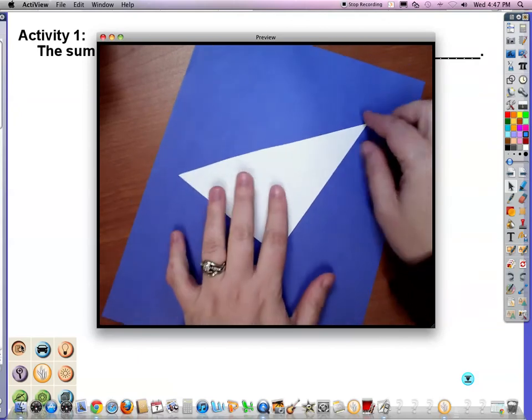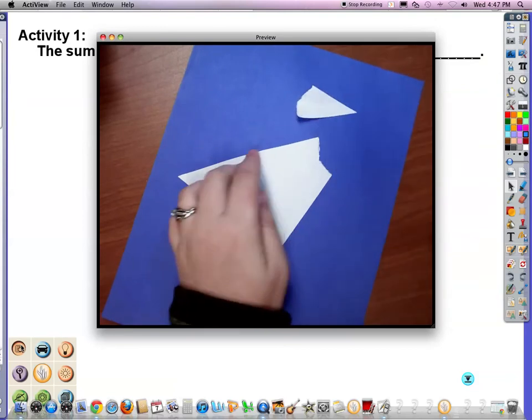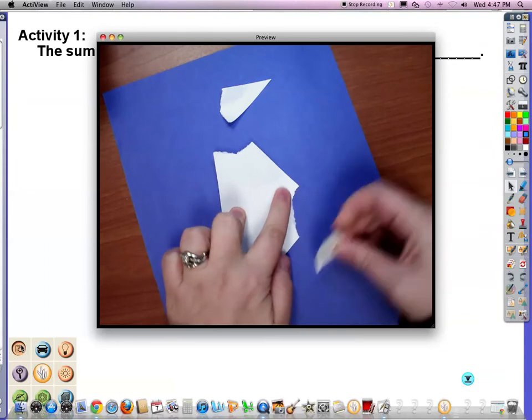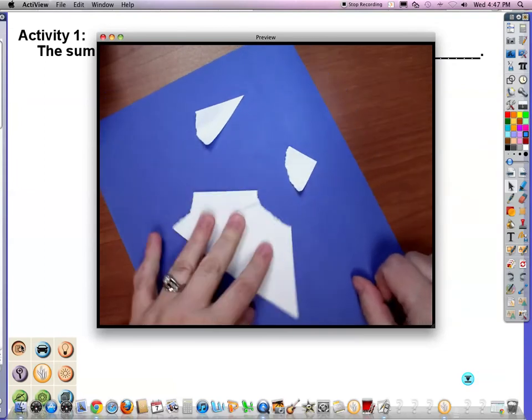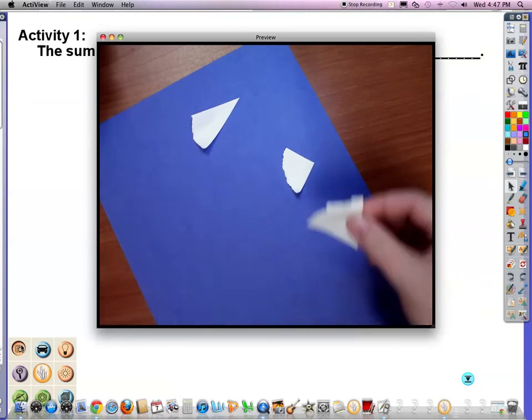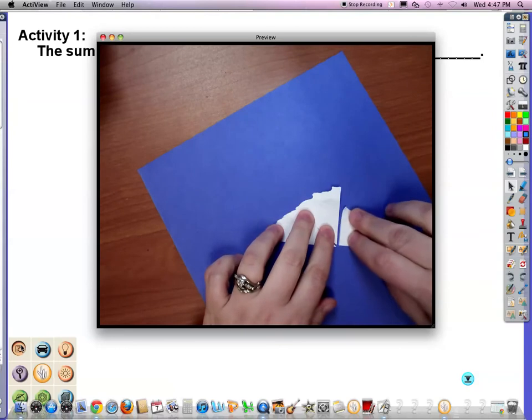The sum of the measures of all three angles. So I'm going to do this sneaky little thing where I'm going to rip off these angles. Ripping that one, ripping off this angle of my triangle, and I'm ripping off the third angle of the triangle.